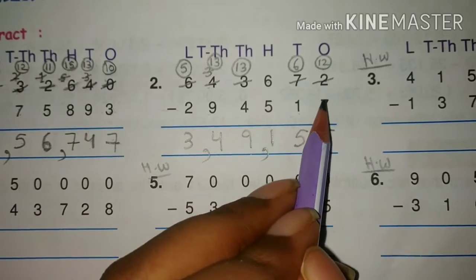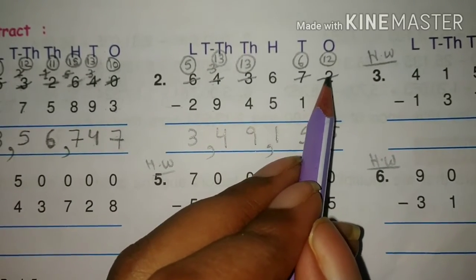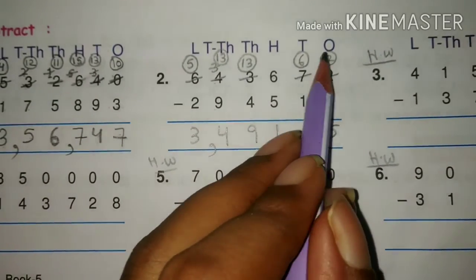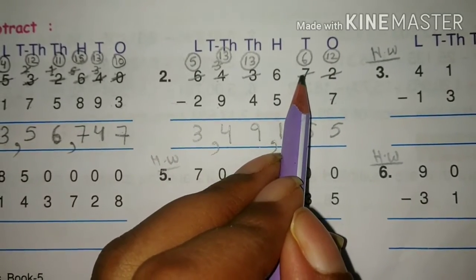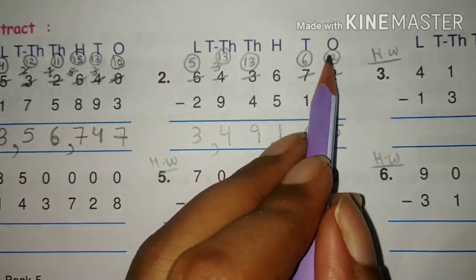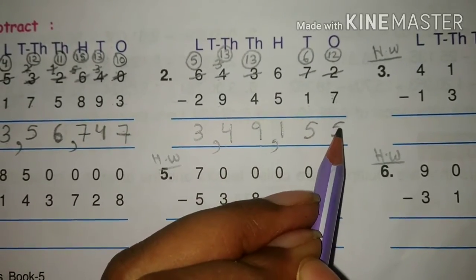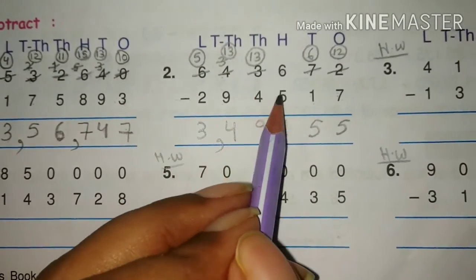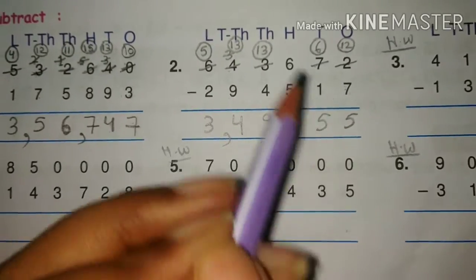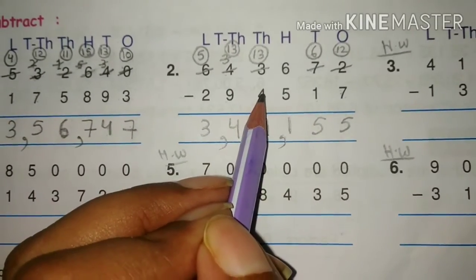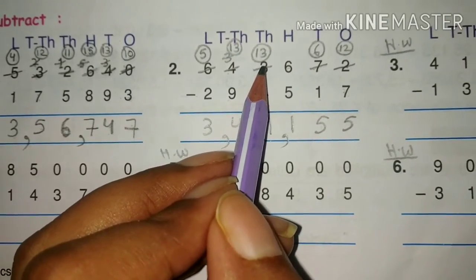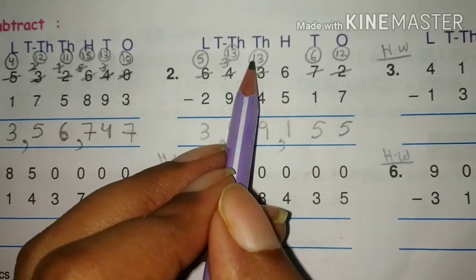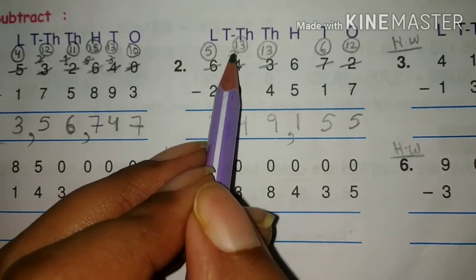Two is smaller than seven, so we will borrow one number from seven to two. Now two will become twelve and seven will become six. Twelve minus seven is five. Six minus one is five. Six minus five is one. Three is smaller than four.